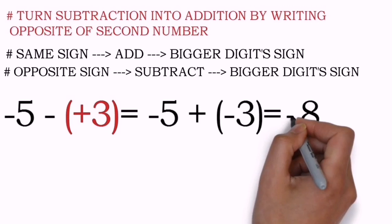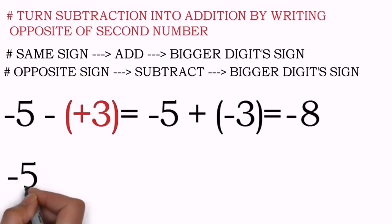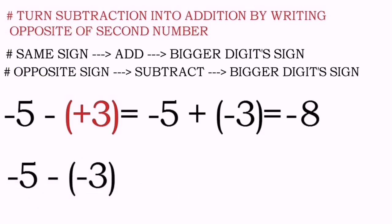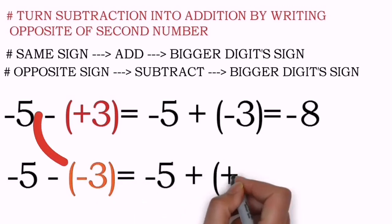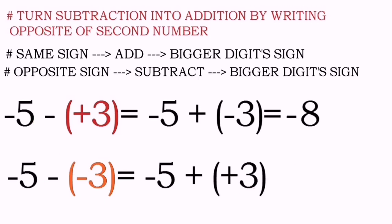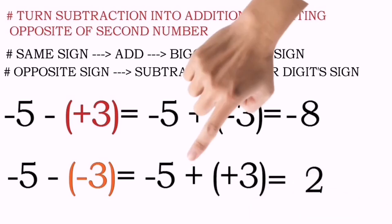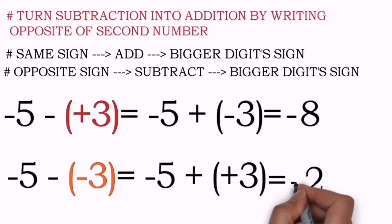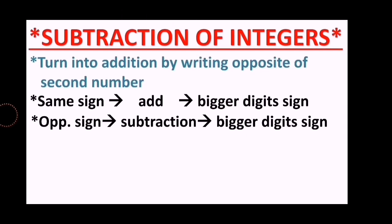Now we utilize the same rules of addition. We have negative 5 and negative 3 - same sign - so we add and get negative 8, giving it a negative sign because of the bigger digit rule. In the second question, negative 3 becomes positive 3 as the first step, subtraction is turned into addition, and applying the rules of addition gives the answer negative 2.